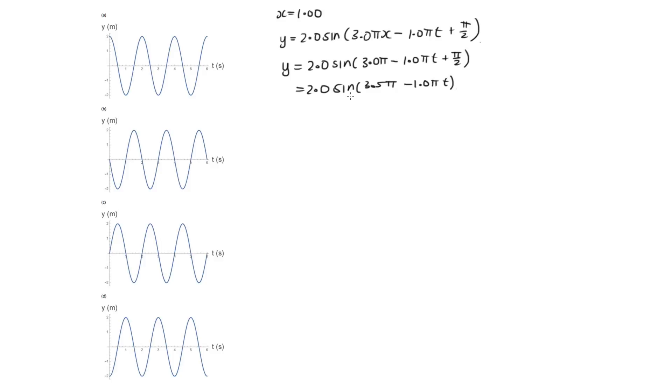Now we can start by working out, well, at t equals 0, where is this point going to be? So let's do at t equals 0, we've got y is equal to 2 sin 3.5 pi, and then this is 0. So 2 sin 3.5 pi, solving this on the calculator, sin of 3.5 pi is equal to minus 1, and so this is equal to minus 2.0. And so only one of these actually starts at minus 2.0. So d here needs to be the correct option.